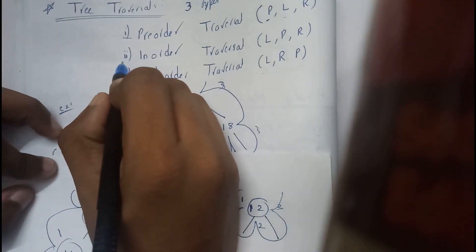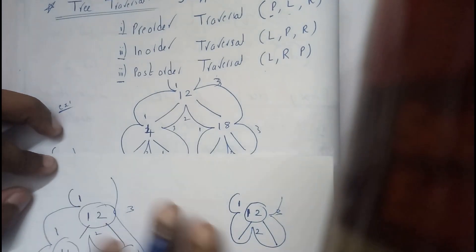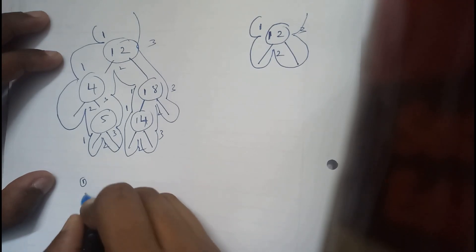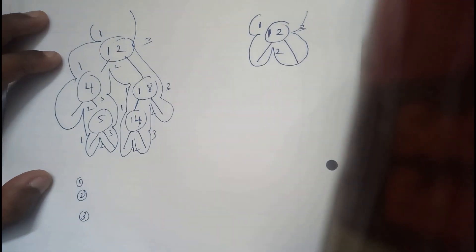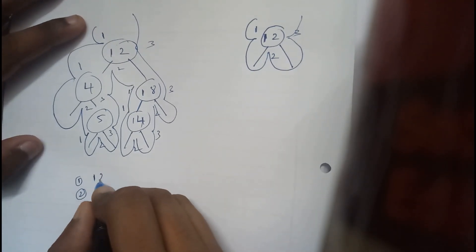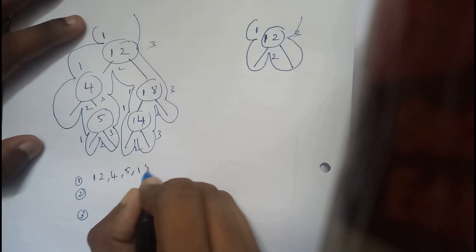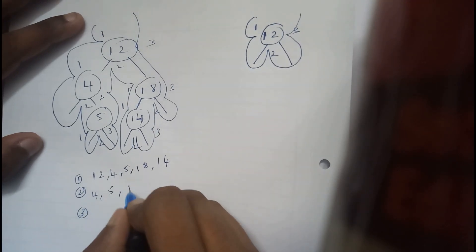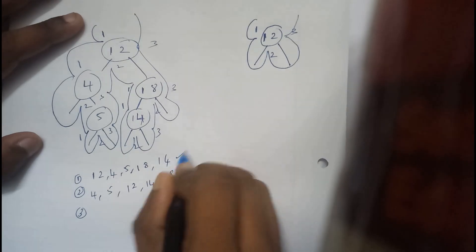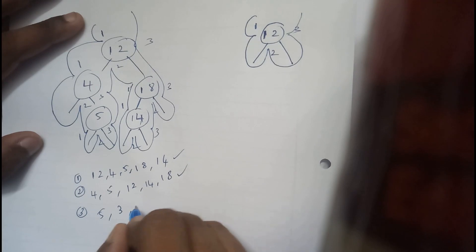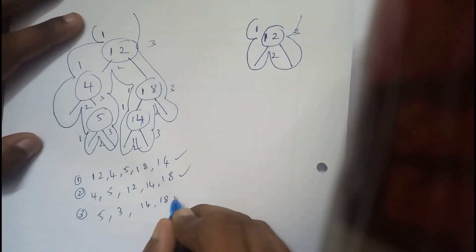Everyone remember that pre-order means one, in-order means two, post-order means three. Now travel according to this. Initially, write the values of one, two, three—how it is traveling. Whenever we write for one, initially it starts at 12, 4, 5, 18, 14. For two, it starts at 4, 5, 12, 14, 18. For three: 5, 4, 14, 18, 12.